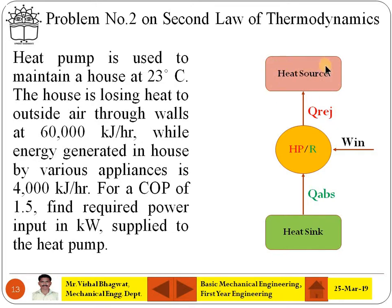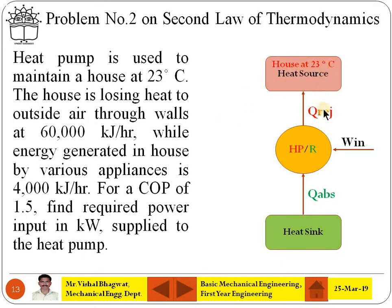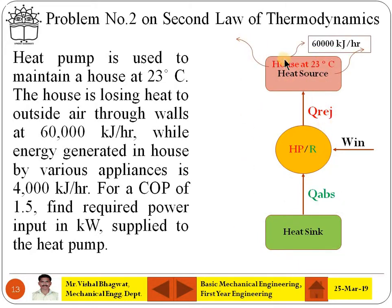Consider the heat source which is at high temperature — that is nothing but the room. The room is losing heat through the walls at 60,000 kJ per hour, and the house is maintained at 23 degrees Celsius. It is rejecting heat at a rate of 60,000 kJ per hour.